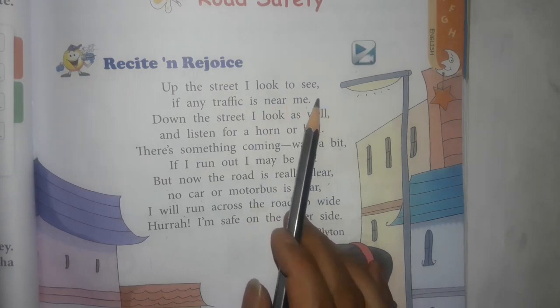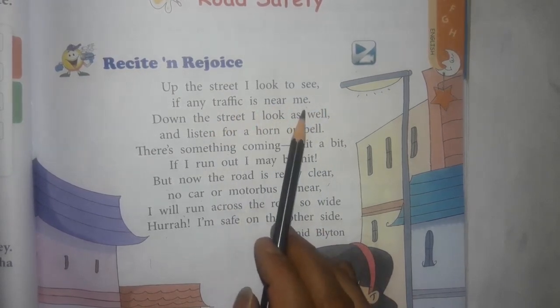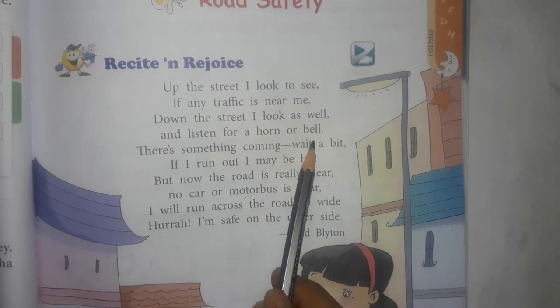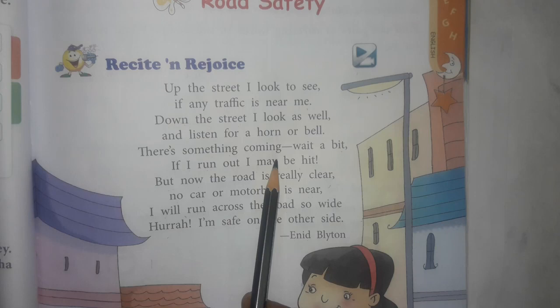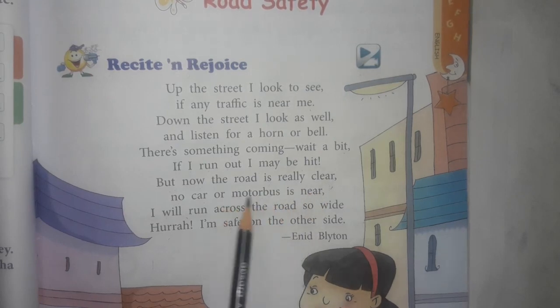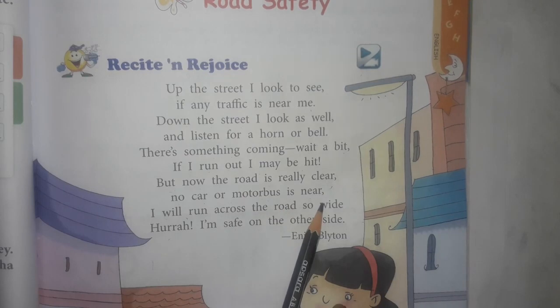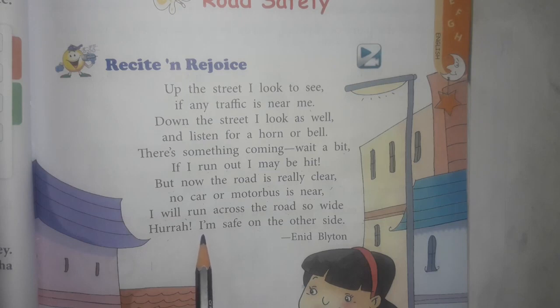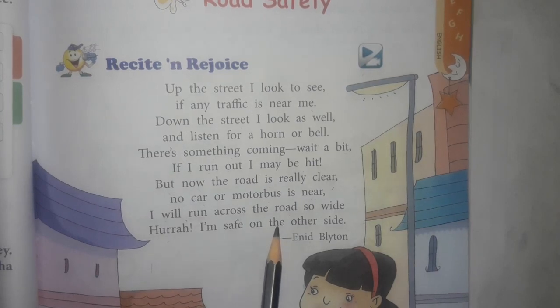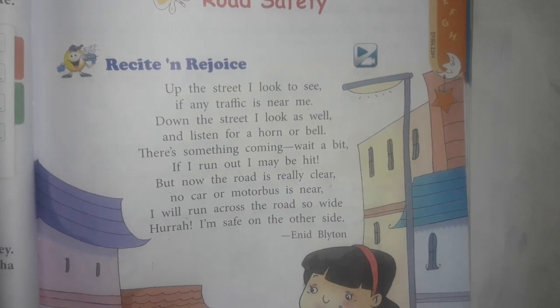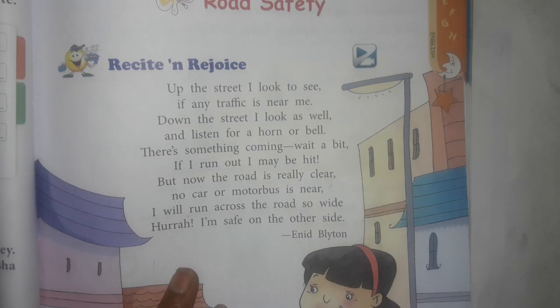You have to look to both sides, that the traffic is near to you or not. When you get down from the footpath, you have to listen to the horn and bell. You have to wait if something is coming. Don't run on the road. And when the road is clear, no car, no bus, no vehicle is near you, you should cross the road accordingly. Follow these instructions and you should be safe. Stay at home. Thank you.